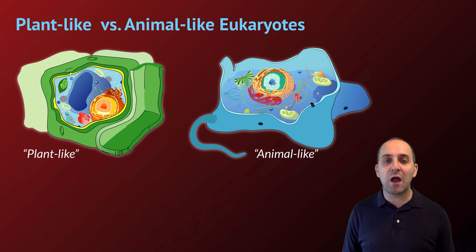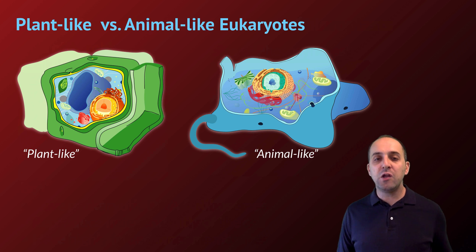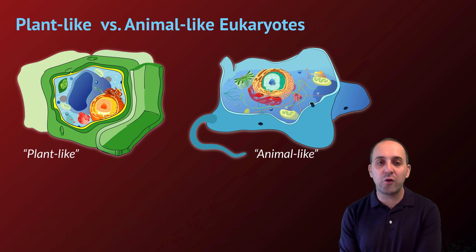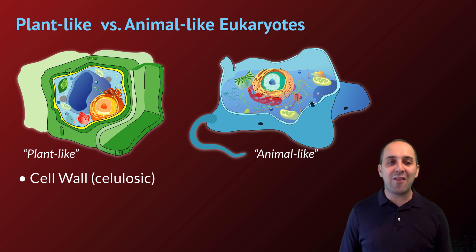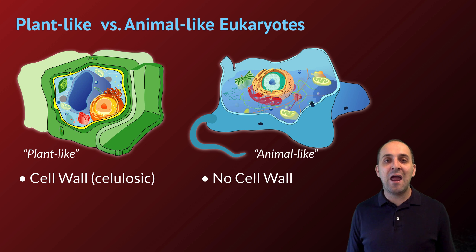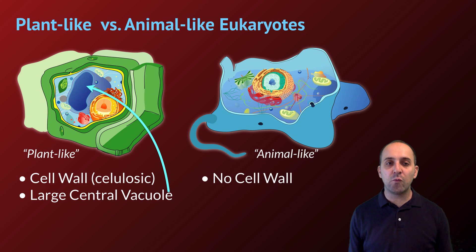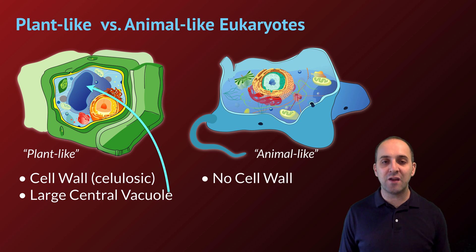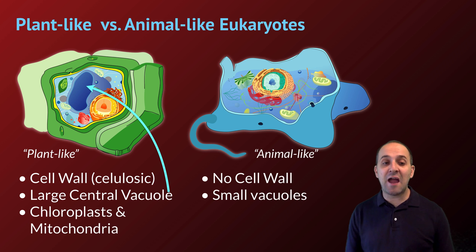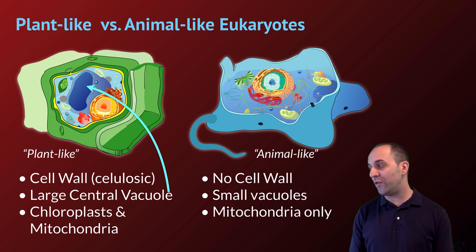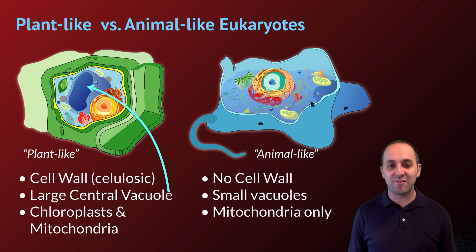Wrapping up our eukaryotic cells, let's compare plant-like versus animal-like eukaryotes. Plant-like eukaryotic cells have a cell wall made out of cellulose, which gives them their boxy structure, whereas animal-like cells do not. Plant-like cells have a large central vacuole visible right next to the nucleus in the image, while animal-like cells have only small vacuoles. Plant-like cells have both chloroplasts and mitochondria since they carry out both photosynthesis and aerobic cellular respiration, whereas animal-like cells only have mitochondria.